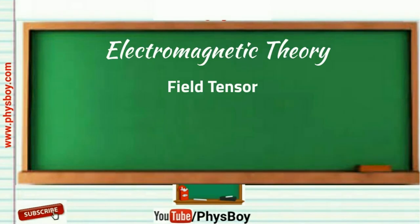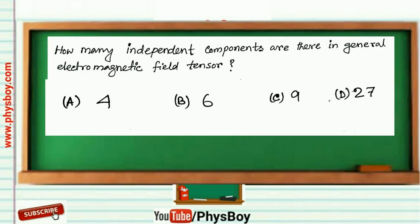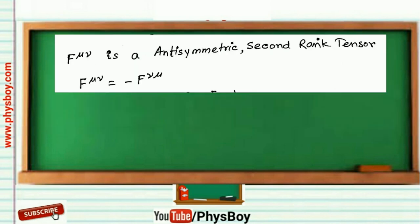The question was: How many independent components are there in general electromagnetic field tensor? Option A: 4, Option B: 6, Option C: 9, Option D: 27. The electromagnetic field tensor is written as F mu nu, and this is an antisymmetric second-rank tensor.